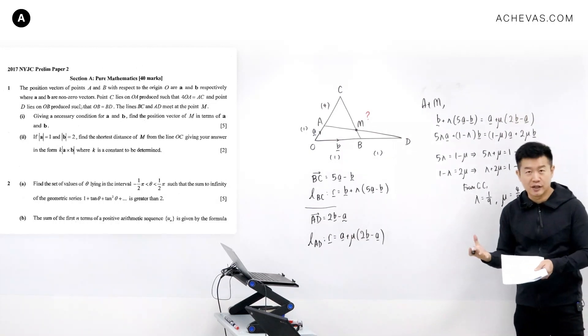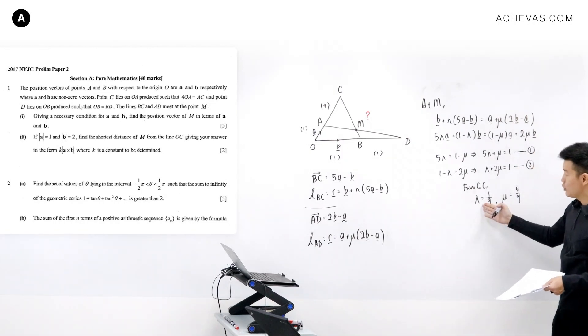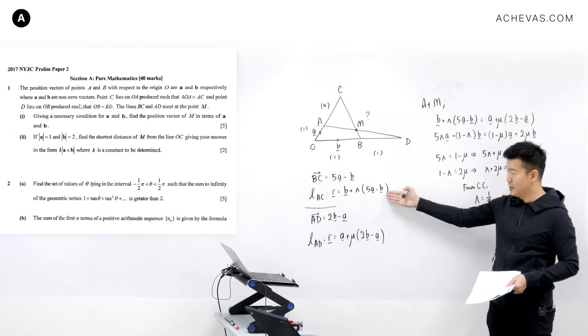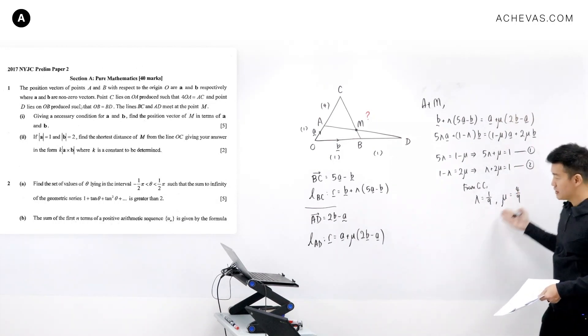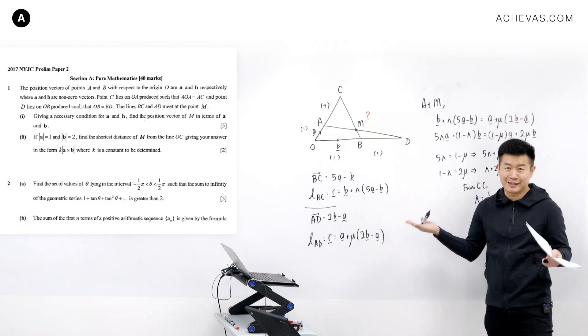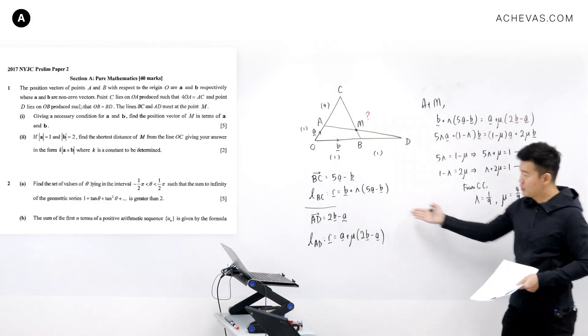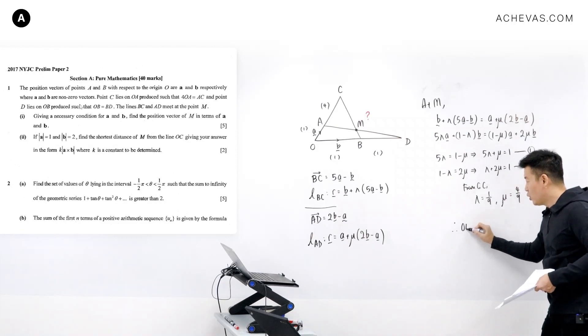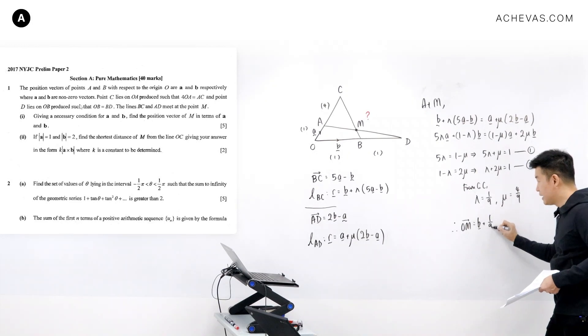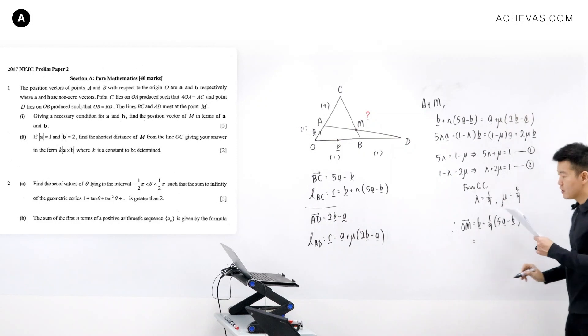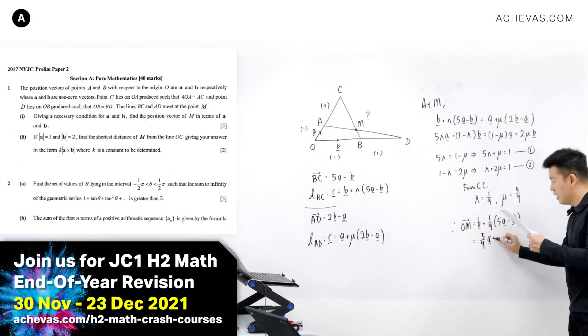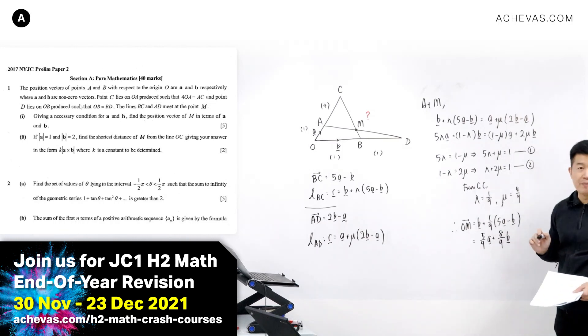And now we can code the position vector of m by making use of either lambda solving back into this equation or making use of mu solving back to this equation. They both should give me the same position vector for m. So let's just make use of lambda. I'm going to sub this back. Therefore OM is going to be equal to b plus lambda of 5a minus b. So OM is going to be equal to 5 over 9a plus 8 over 9 of b.